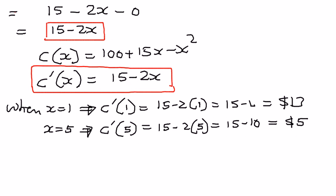Therefore, this is how we can figure out the cost of producing jam. If one case of jam is produced, it is going to cost 13 dollars. If five cases of jam are produced, it is going to cost 5 dollars. This is how we solve application-related problems using limits to find the derivative of a function. In my next presentation, we shall see some more application examples related to derivatives of a function.